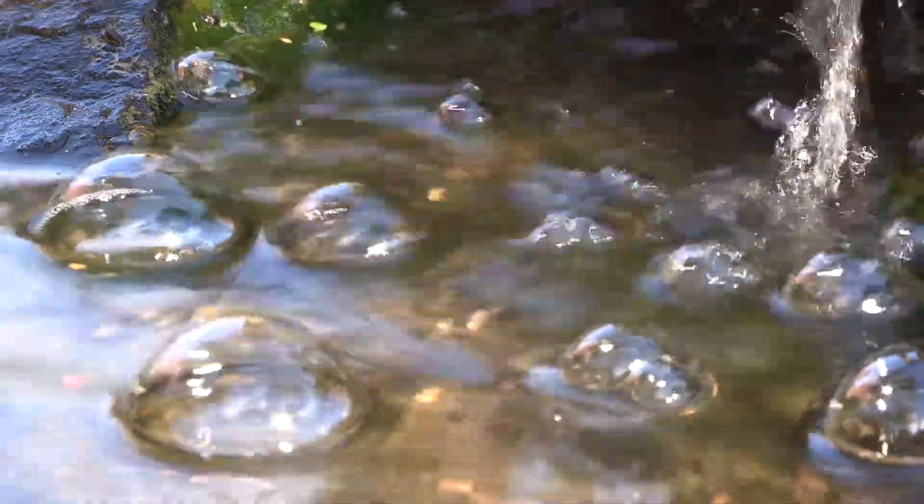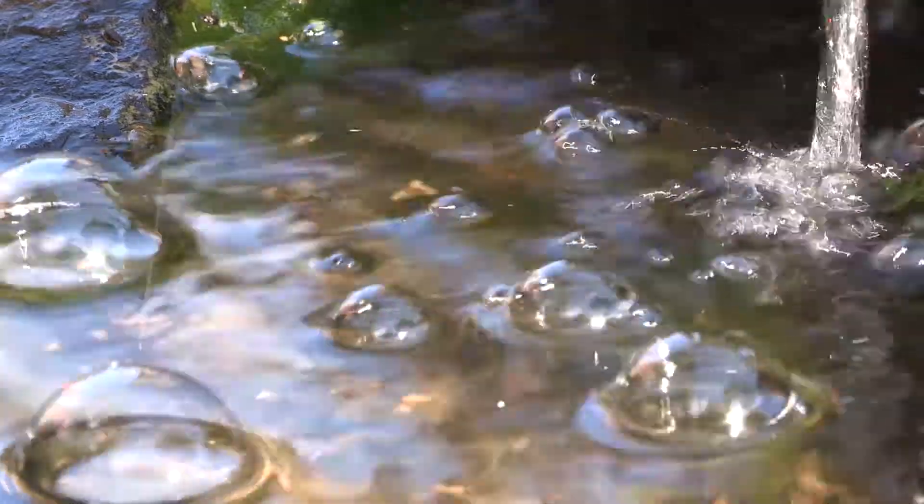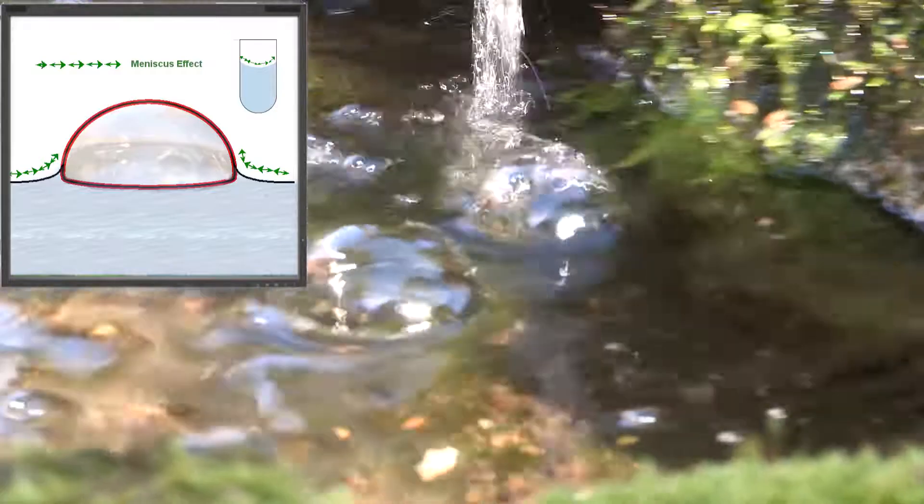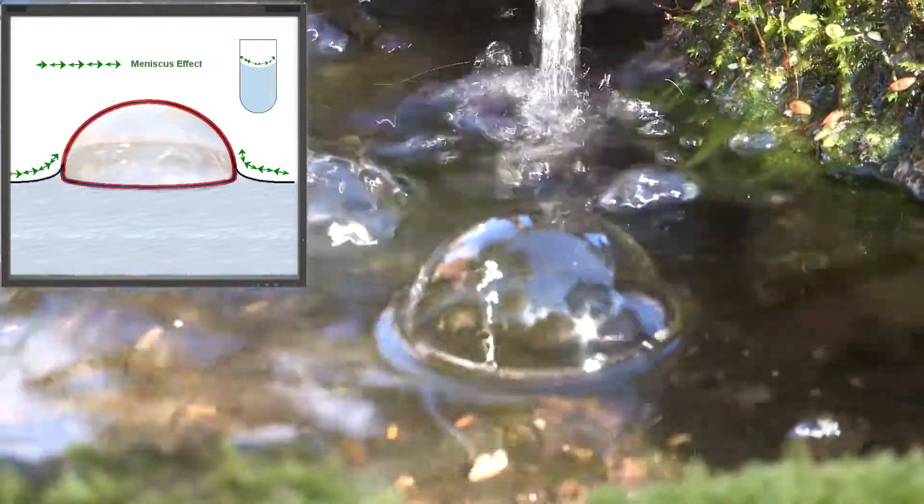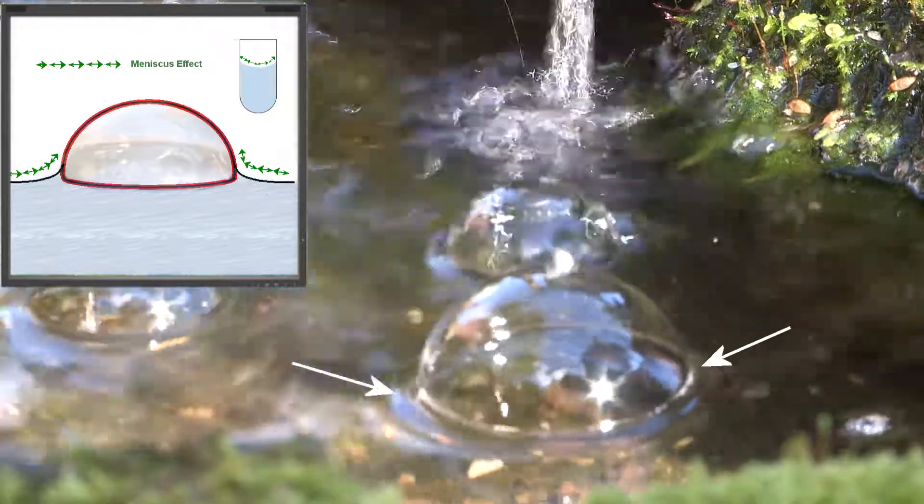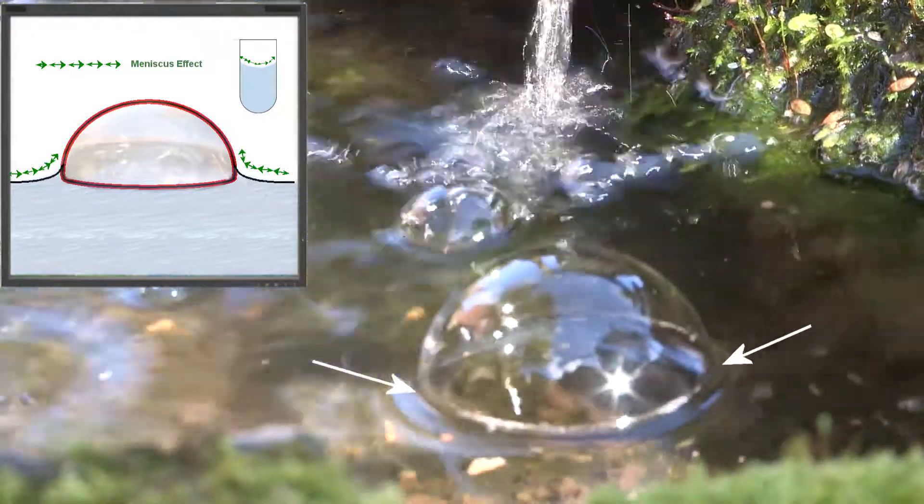As to why bubbles are attracted to each other and join forces, this can be explained by the meniscus effect, whereby the surface of the water is raised up around the edge of the bubble. This can clearly be seen around the edge of the large bubble below.